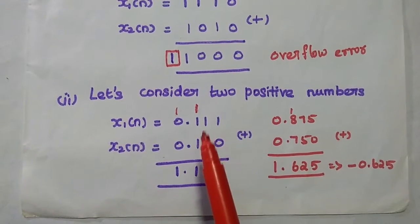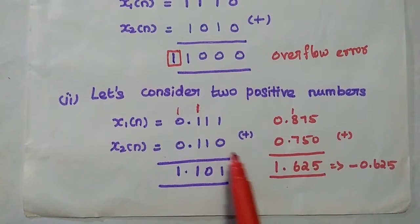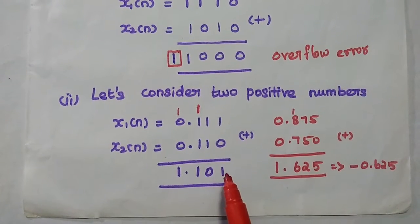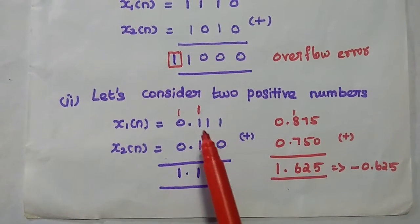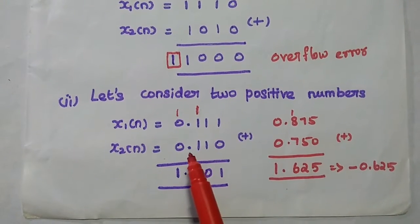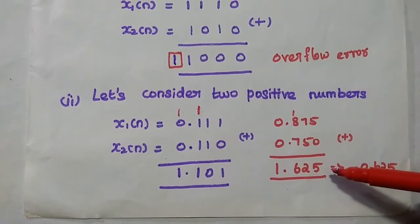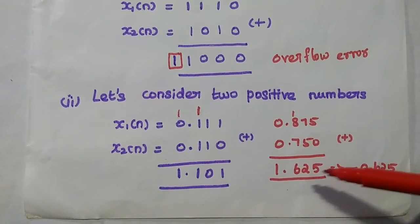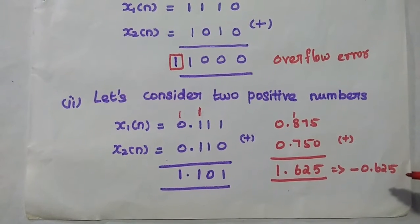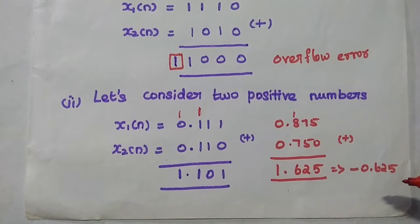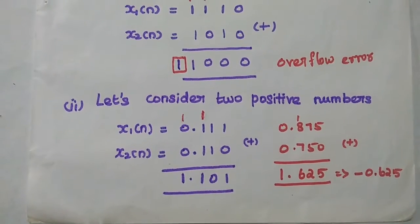When we add two positive numbers, the result should be positive. But here we are getting a negative number, so the output is wrongly interpreted. The decimal equivalent of 0.111 is 0.875 and 0.110 is 0.750. Adding these gives 1.625, but due to overflow it is interpreted as minus 0.625 — which is a wrong answer. So due to this overflow, errors are introduced in the output.